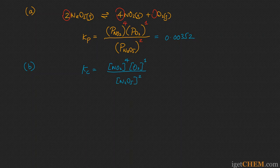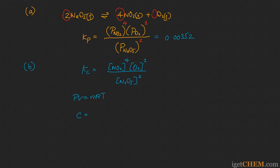Kp and Kc have different values because one is written in partial pressures and the other in concentrations, but they are related. According to the ideal gas law, PV = nRT, the concentration of a gas equals the number of moles per volume. Rearranging the ideal gas law, concentration equals the partial pressure of the gas divided by RT.